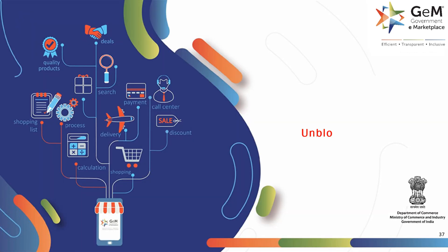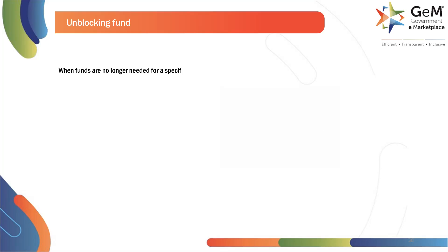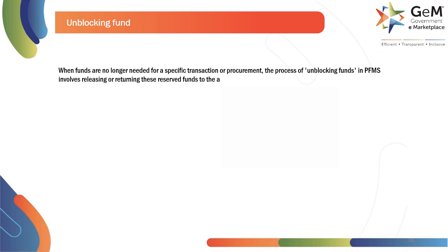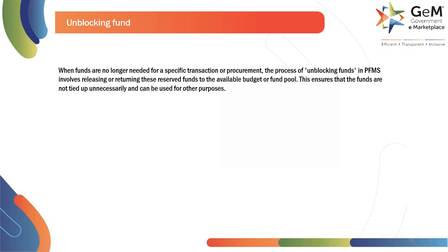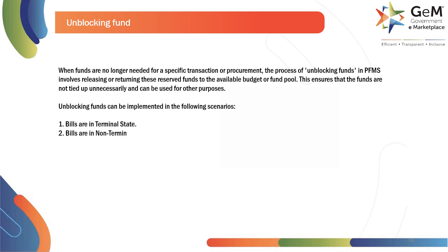Let's look into Unblocking Funds. When funds are no longer needed for a specific transaction or procurement, the process of Unblocking Funds in PFMS involves releasing or returning these reserved funds to the available budget or fund pool. This ensures that the funds are not tied up unnecessarily and can be used for other purposes. Unblocking Funds can be implemented in the following scenarios: 1. Bills are in Terminal State. 2. Bills are in Non-Terminal State.